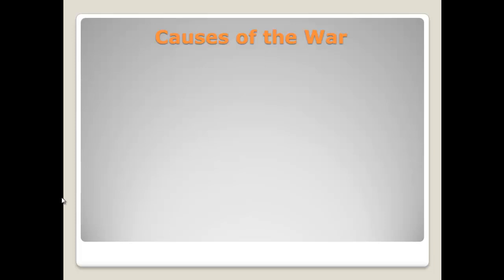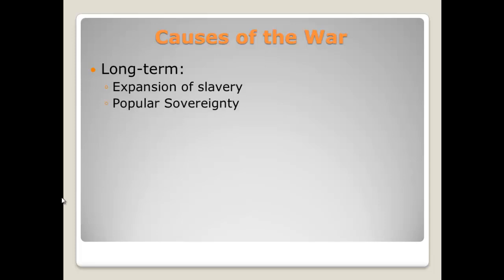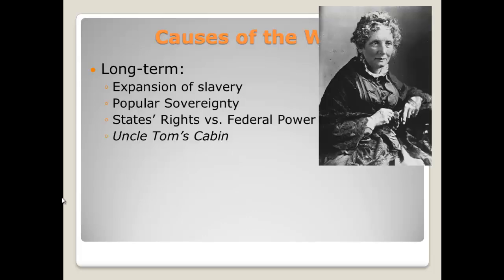Let's start off talking about the causes of the war. There are many causes — here are some of the big ones. Some long-term causes: we have the expansion of slavery, which becomes a big issue as a result of manifest destiny in the 1840s and 1850s. Popular sovereignty is the right for individuals of a territory to vote on whether or not that territory will be free or slave, and that was a huge cause of the Civil War because fighting breaks out. We also have states' rights versus federal power, which has been an issue since the beginning of the Constitution.